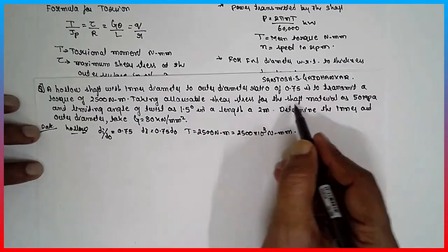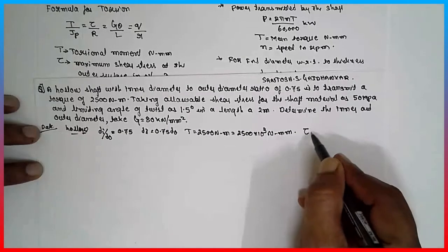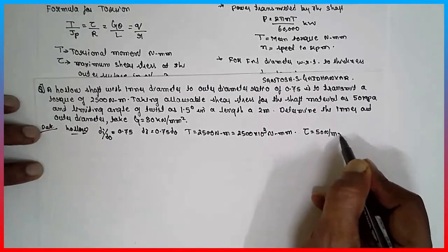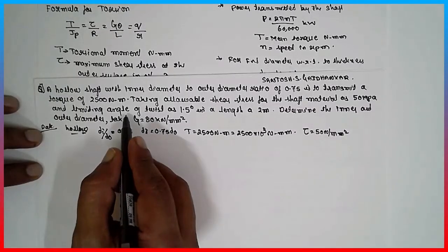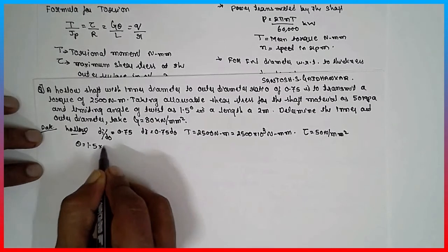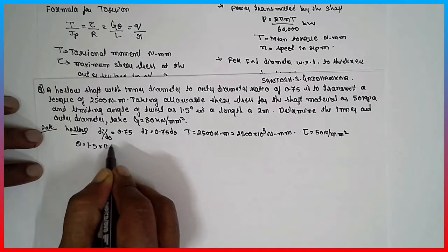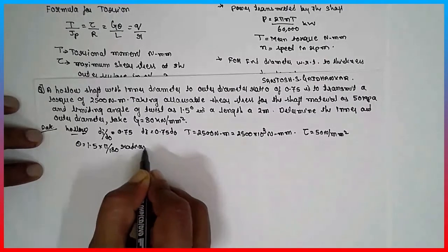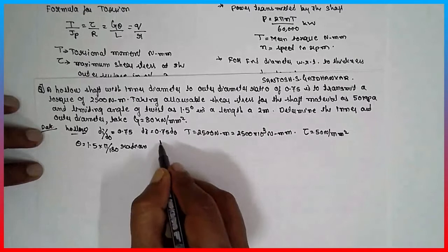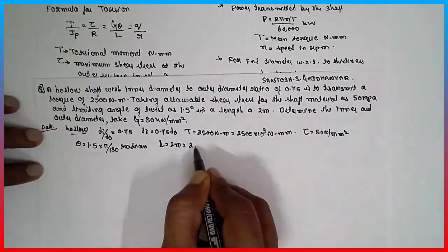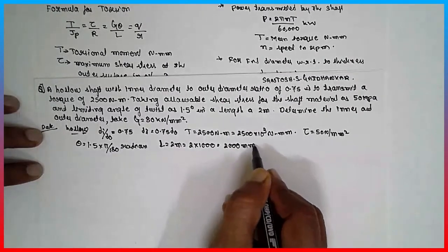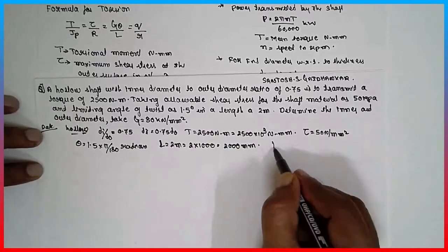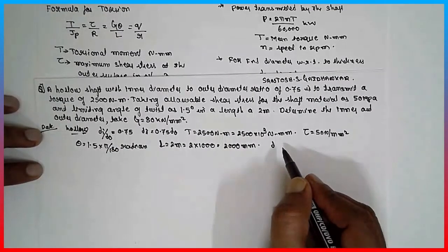The allowable shear stress for the shaft material is 50 MPa, so tau equals 50 N/mm², because 1 MPa equals 1 N/mm². The limiting angle of twist is 1.5° multiplied by pi/180 to convert to radians. The length is 2 m, which converted to mm is 2000 mm. We have to find out the inner and outer diameter.